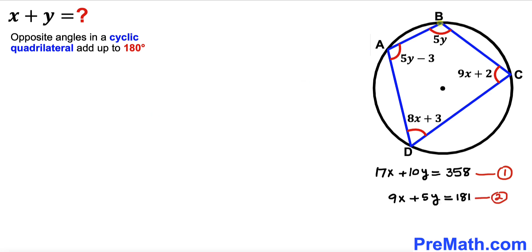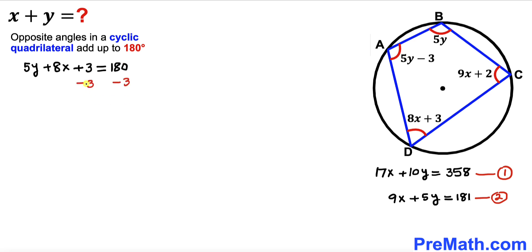Now focusing on the other pair of opposite angles, angle B and angle D, which also add up to 180 degrees. So 5y plus (8x plus 3) equals 180. Subtracting 3 from both sides: 8x plus 5y equals 177. This is Equation 3.